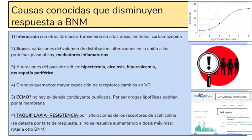Particularmente con los relajantes musculares hay varias causas conocidas y estudiadas que disminuyen su respuesta. En la curva concentración-respuesta, algunos pacientes logran una respuesta mucho menor, o se necesitan dosis tan exageradas para lograrla que actúan en otros receptores provocando efectos adversos como arritmias. Hay fármacos que disminuyen el efecto de los relajantes: furosemida en altas dosis, fenitoína, carbamazepina. La sepsis — por variaciones del volumen y aparición de mediadores inflamatorios — antagoniza el efecto de los relajantes musculares. Otras alteraciones del paciente crítico que reducen la respuesta: hipertermia, alcalosis, hipercalcemia, neuropatía periférica.